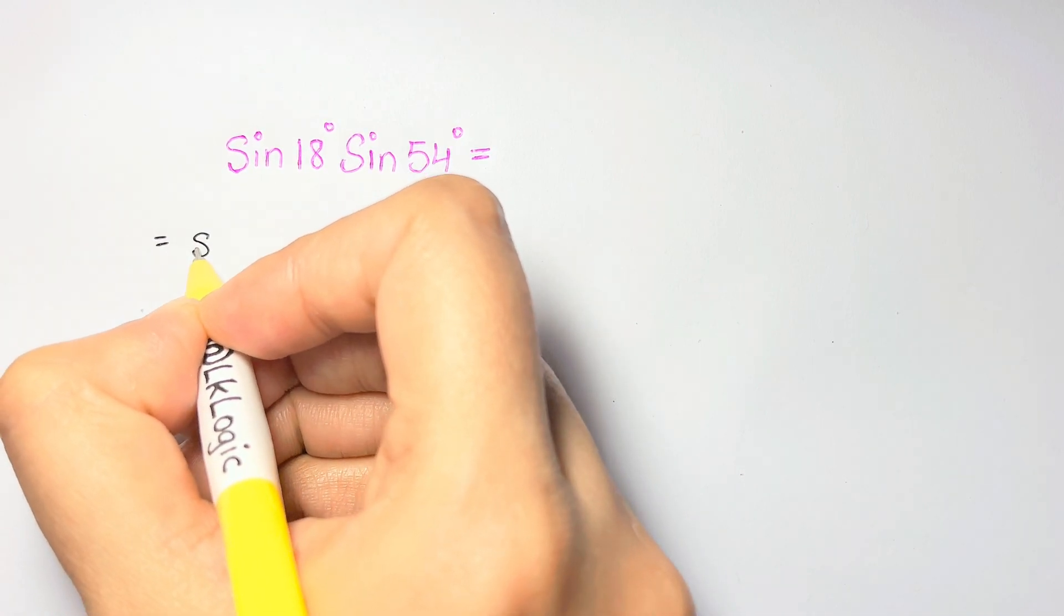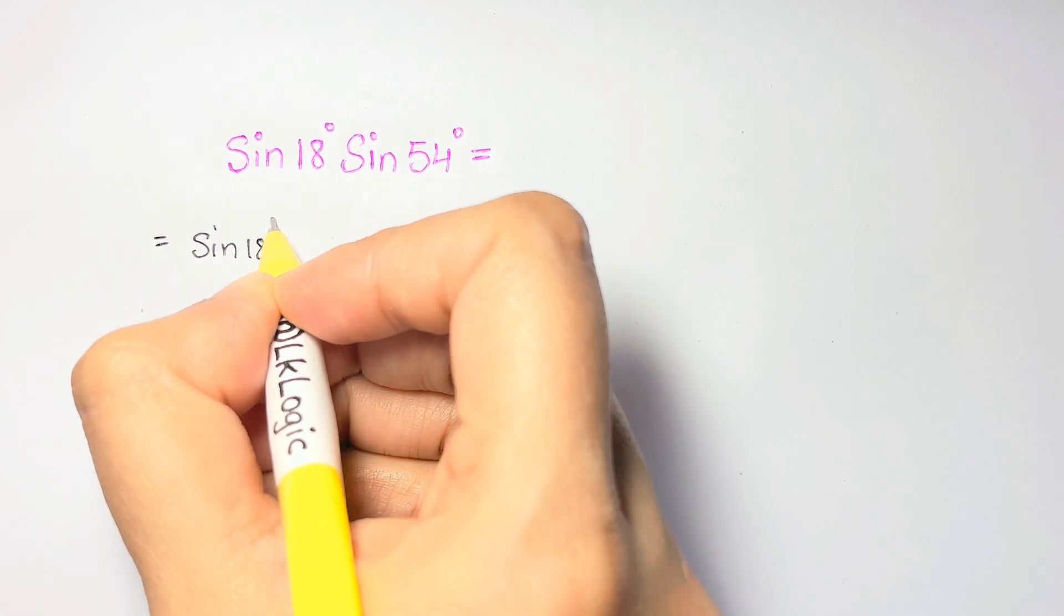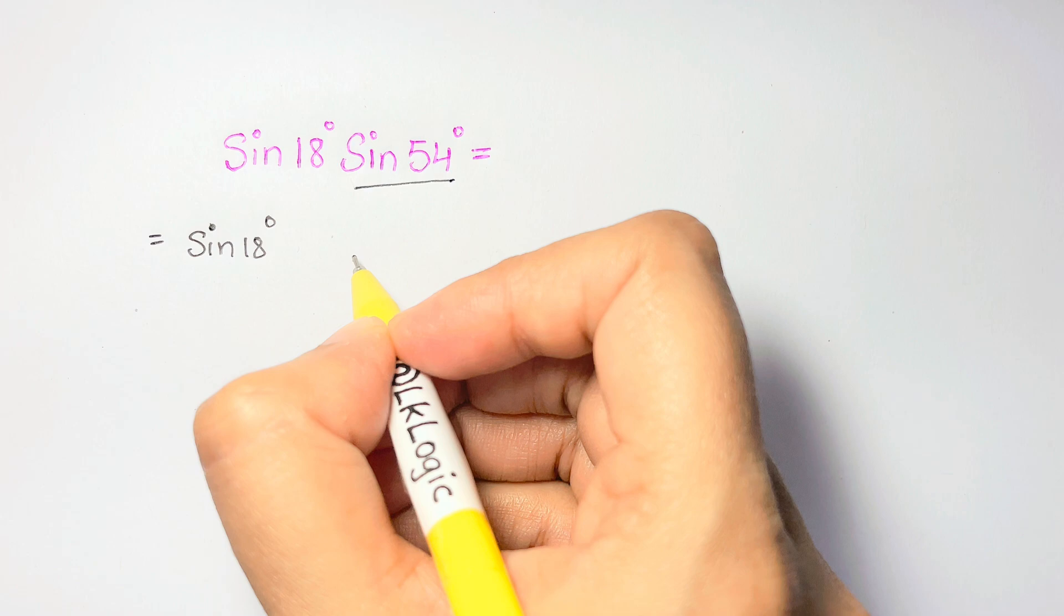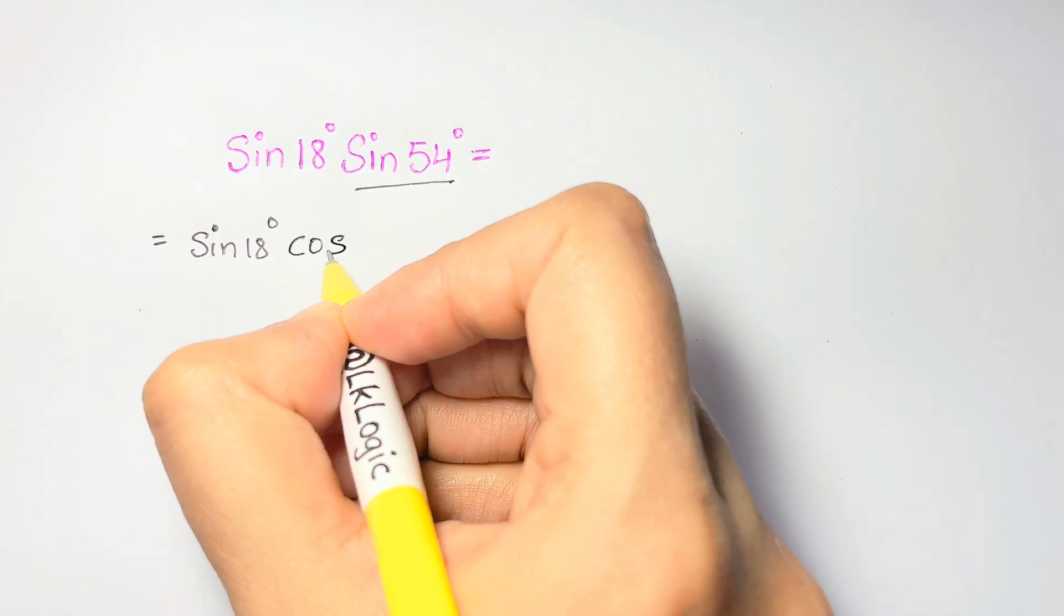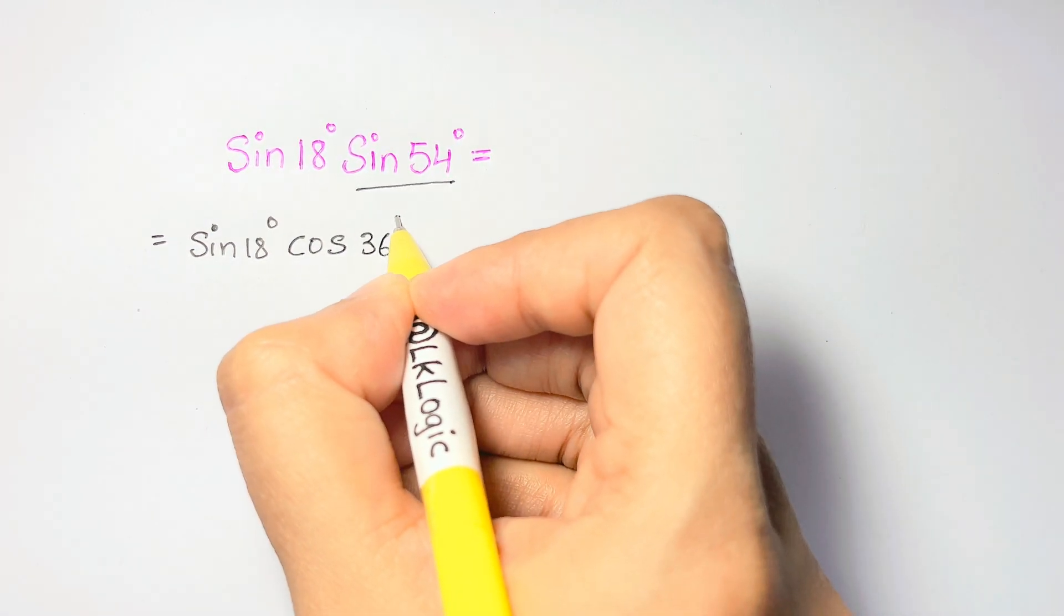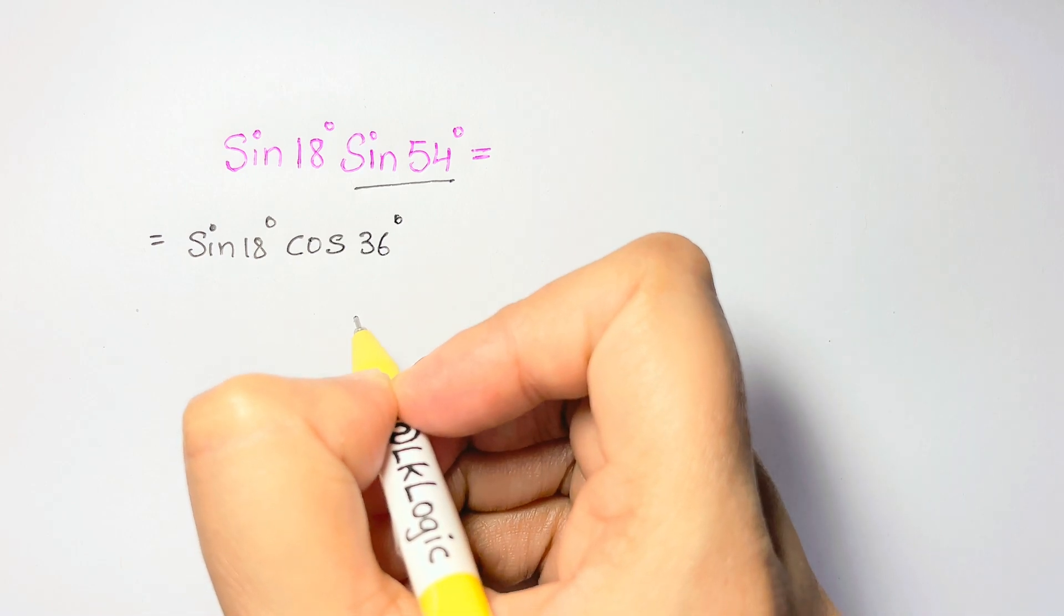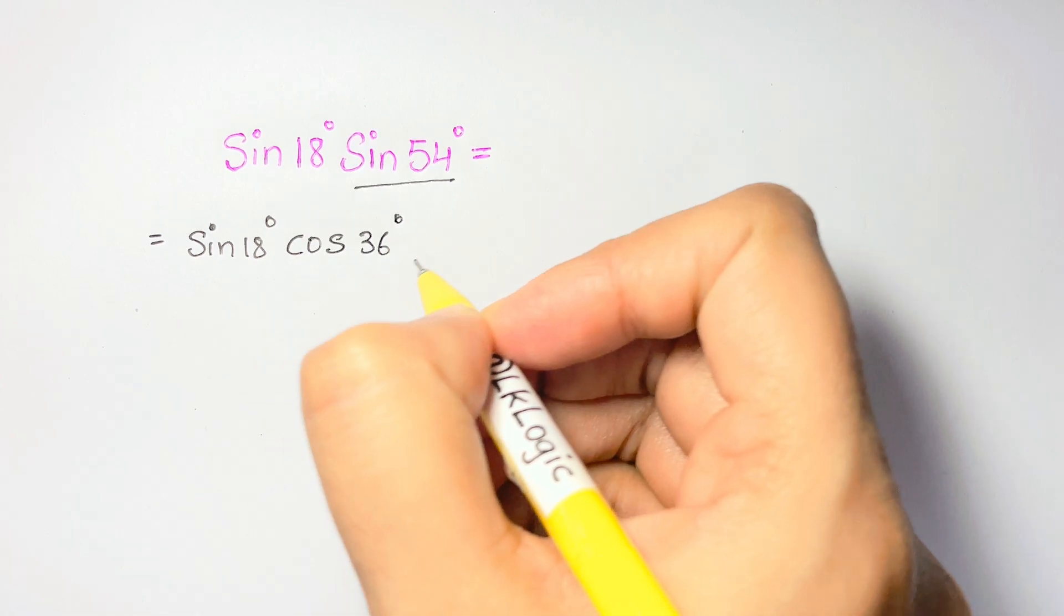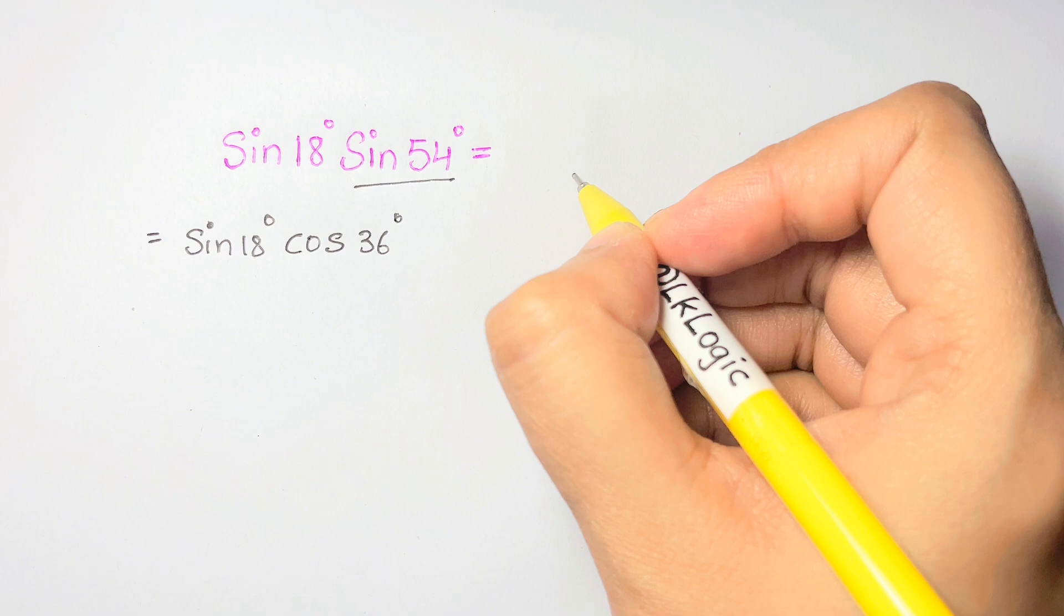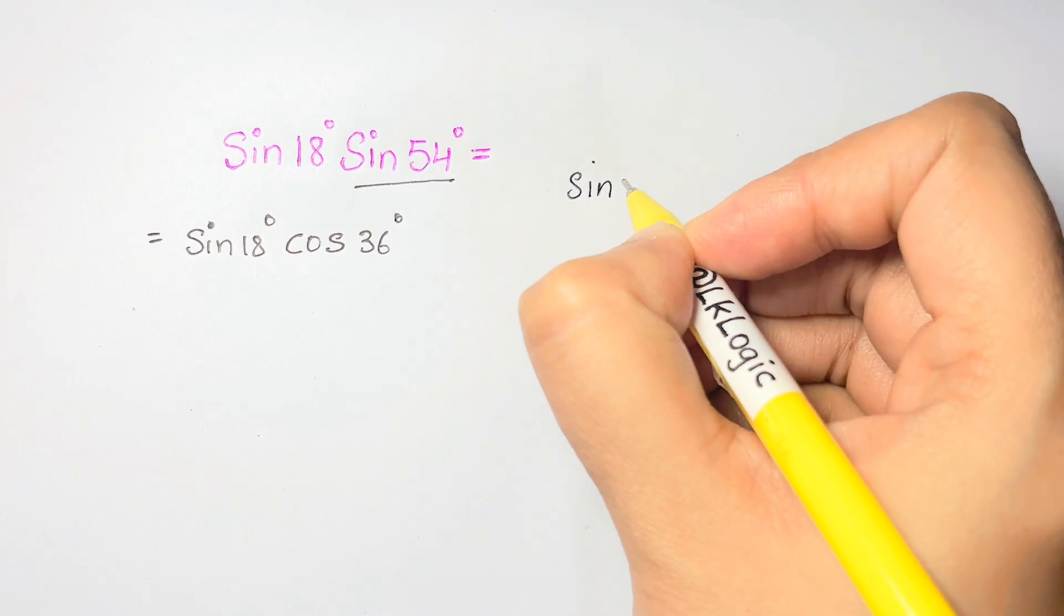Now what we are going to do is first we'll write sine 18 degrees, then we are going to rewrite sine 54 degrees as cos 36 degrees. Now notice that 36 degrees is the double of 18 degrees. So what we are going to do is use the double angle formula for sine.